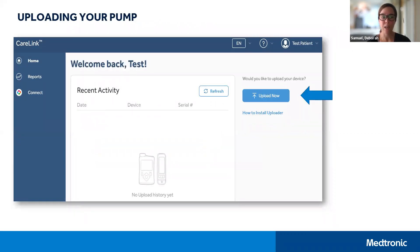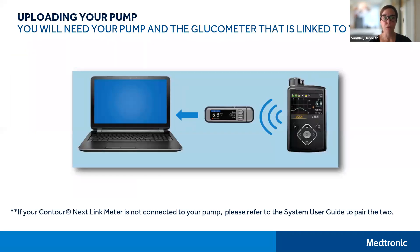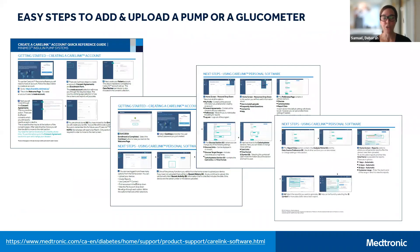Once you have installed the uploader software, you are ready to upload your pump. Click on the button you see here — upload now. At this point you'll need your pump and the glucometer that is linked to your pump. We want to ensure that your Contour Next Link meter is paired to your current pump, and you can check this under your utilities menu. If your link meter is not connected to your pump, please refer to the system user guide to pair the two before proceeding. The quick reference guide will walk you through all of the steps to upload your pump.